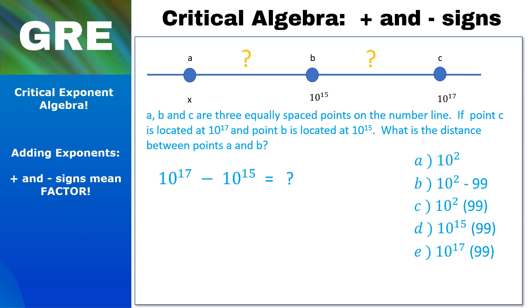Now, before you get all excited and decide that the answer is A, remember that minus signs tell us to factor. Now we have 10¹⁵ on each side of the minus sign, so we kick 10¹⁵ out to the left and put what's left over into the parentheses. Now we do some quick arithmetic and we can see that the answer is D. Okay, great job.